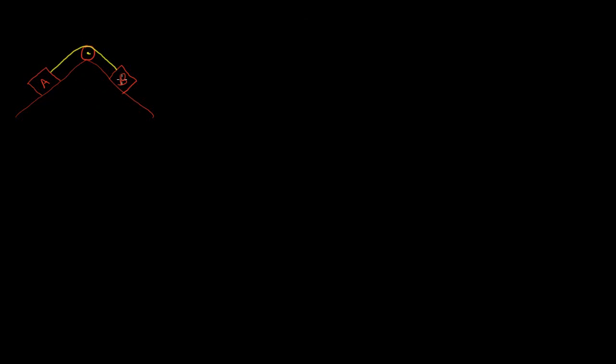Sometimes the position of one particle will depend on the position of other particles, and we can see that with this pulley system here. In this system we have two masses, mass A and mass B, connected together through this chord. If mass A moves down the ramp, mass B moves up the ramp. If mass A moves up the ramp, mass B moves down the ramp. When we're analyzing pulley systems, there are a couple of assumptions we make.